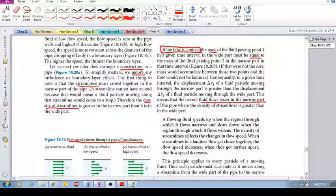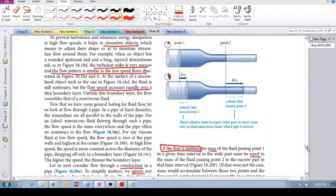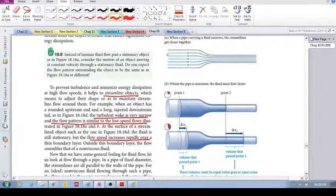So what does that mean? Something like this: we have a wider diameter pipe and then it narrows, it becomes constricted. The first thing that we need to see is what happens to the streamlines.